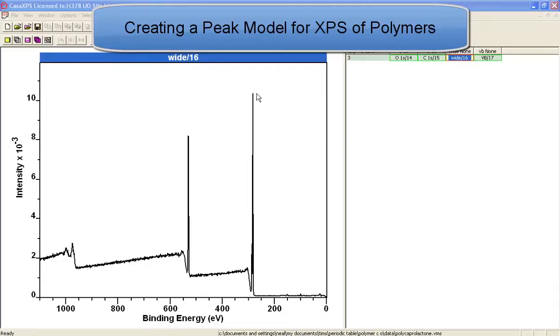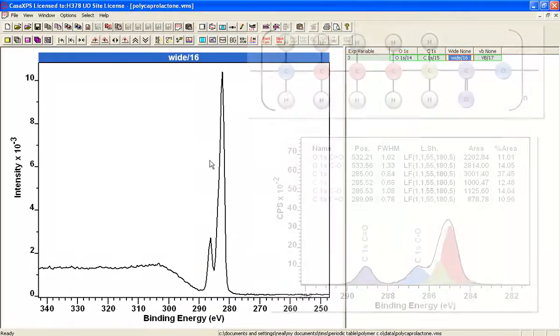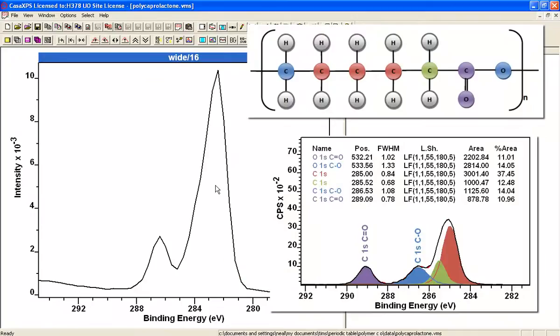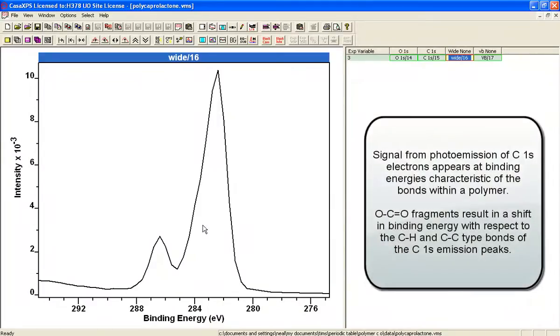One of the significant advantages of XPS is its ability to see chemical state information within data. I've just zoomed in on a survey spectrum to the carbon 1s peak and you can see that you have structure here and this structure reflects the chemistry within this material.